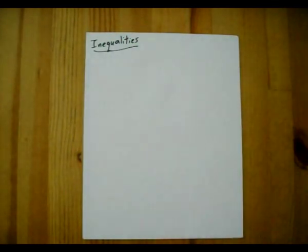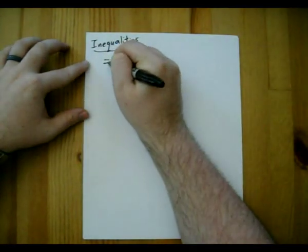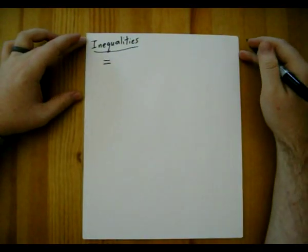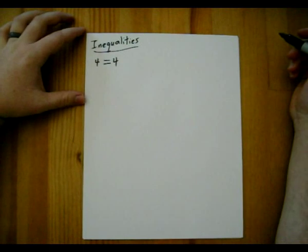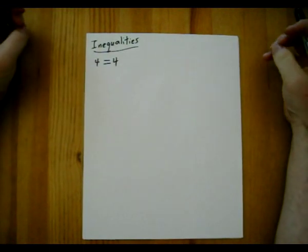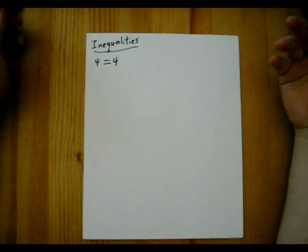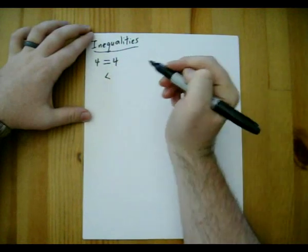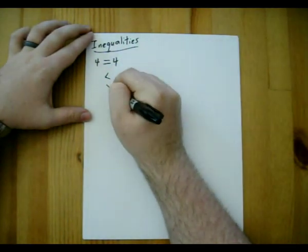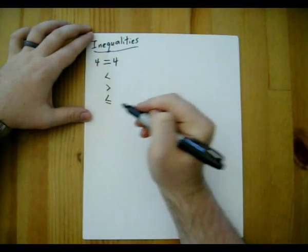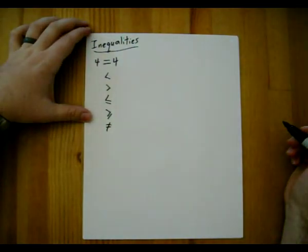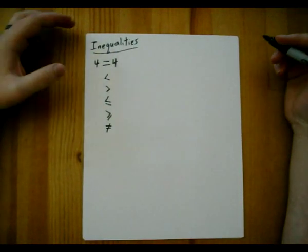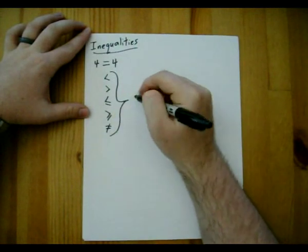Today we're going to be talking about inequalities. There are several different symbols seen in mathematics, and one of them you should be familiar with is the equal sign. This is used when two things are equal, like 4 equals 4. There are also symbols used to show that two things are not equal but have some relation: the less than symbol, the greater than symbol, the less than or equal to, the greater than or equal to, and the not equals. These symbols are used to show a relation that is not equality — so these symbols are inequalities.